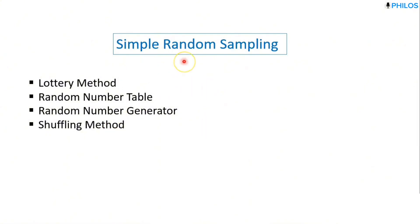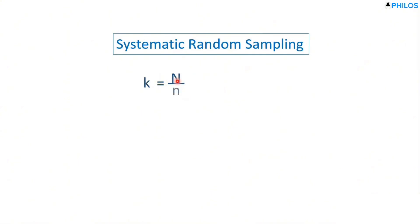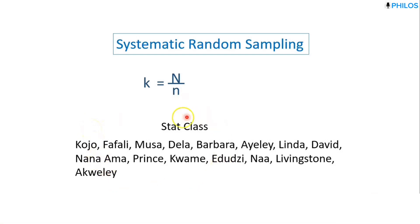Next is systematic random sampling. For this technique, we select samples at regular intervals from the population. First, we calculate the sampling interval, represented by k. The formula is: k equals the population size N divided by the sample size n. We then select every k-th individual from the population.